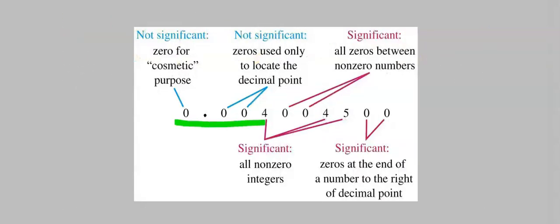If you consider this number, all the zeros before the first number are not significant. Zeros in between numbers are significant. And zeros at the end of these numbers are equally significant.